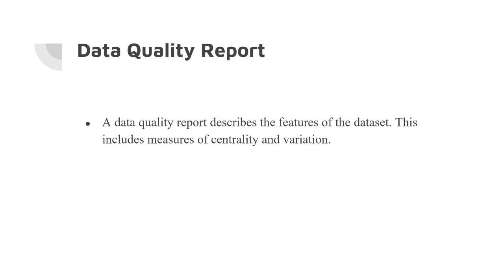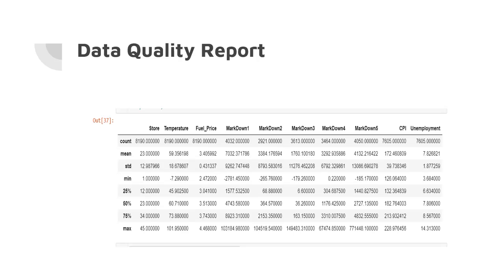The next slide will show a data quality report which describes the centrality and variation in our data set. We see that some factors affecting weekly sales can be temperature, fuel price, consumer price index, and unemployment. This chart shows the measures of centrality for all these variables.